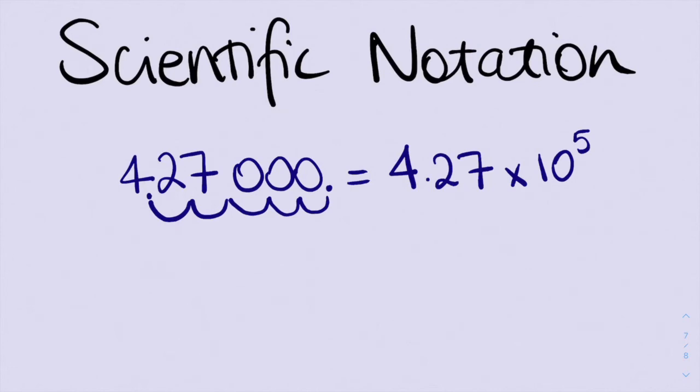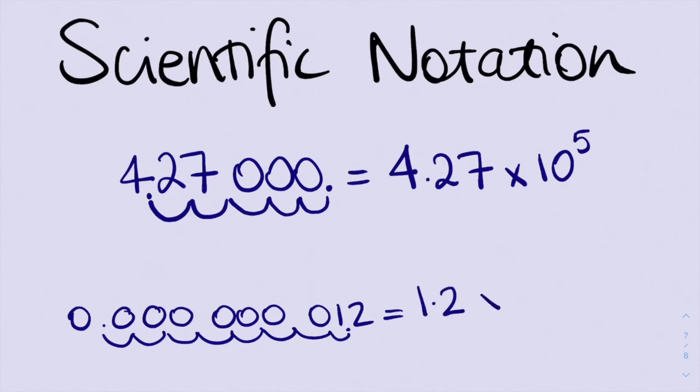Now, if I have the number 0.0000012, I want to get my decimal place in between here, between this 1 and 2. So I'm going to jump 1, 2, 3, 4, 5, 6, 7, 8 times. So we have 1.2 times 10 to the power of negative 8. Remember, it's negative because we've moved our decimal place to the right.